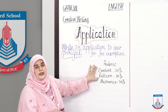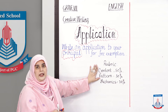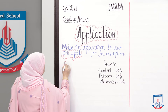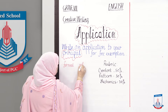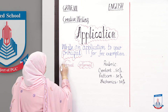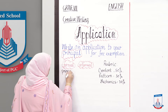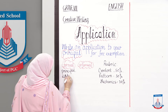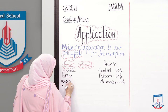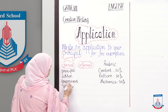Applications and letters are of two types: formal and informal. Formal is what you write to your principal, manager, or editor — whether it be an application, letter, or email. Informal is what you write to your family or friends.